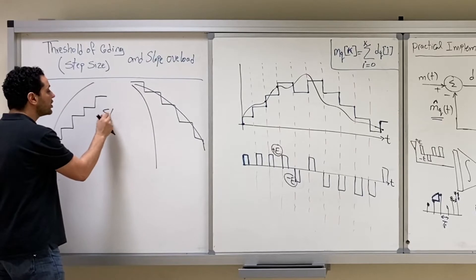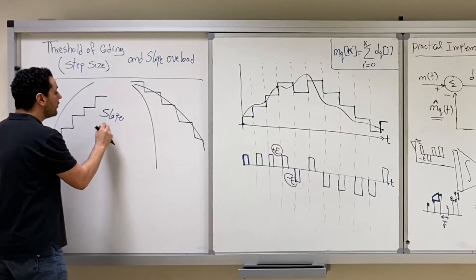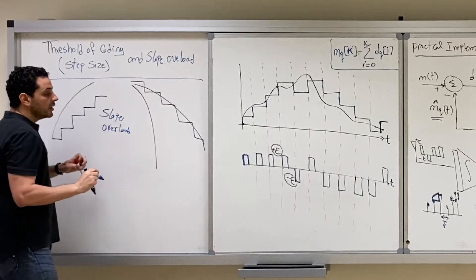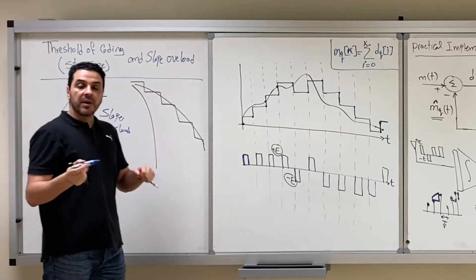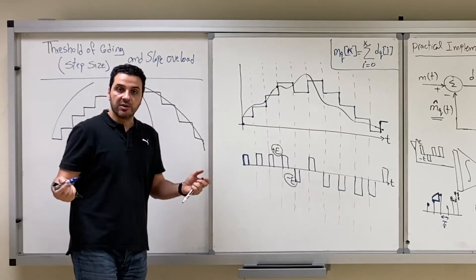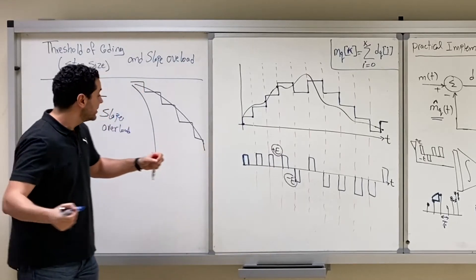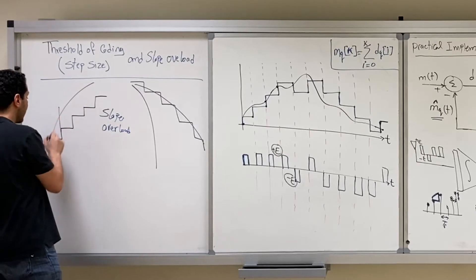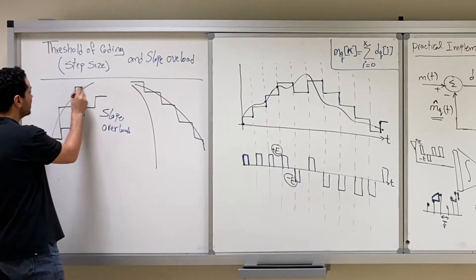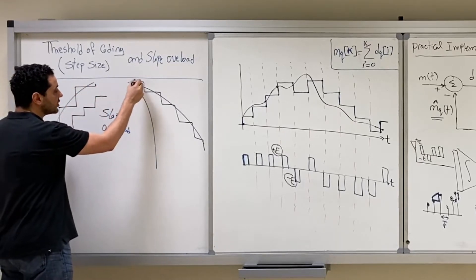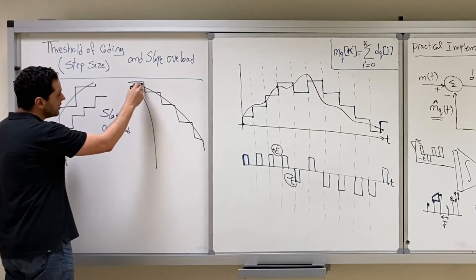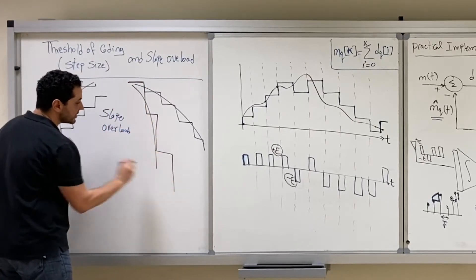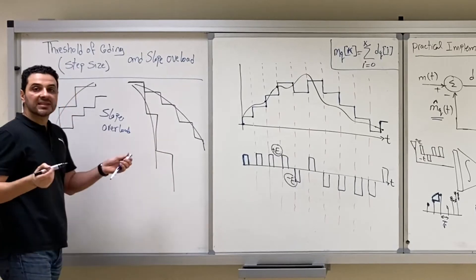This is what we call slope overload. You can solve this problem by increasing the step size. If you increase the step size, with one step you can catch your signal going up, and you can also catch it going down with one step.